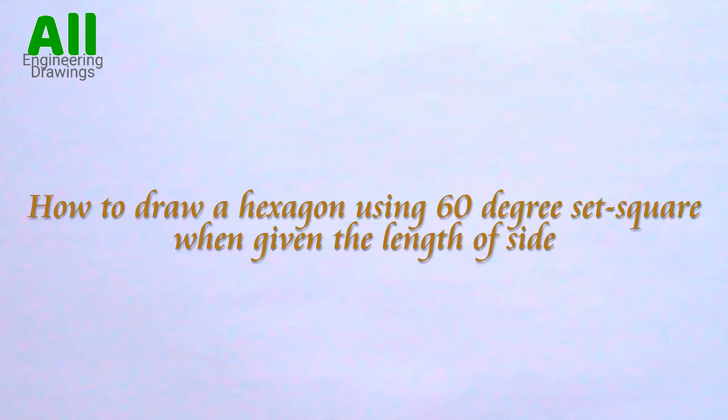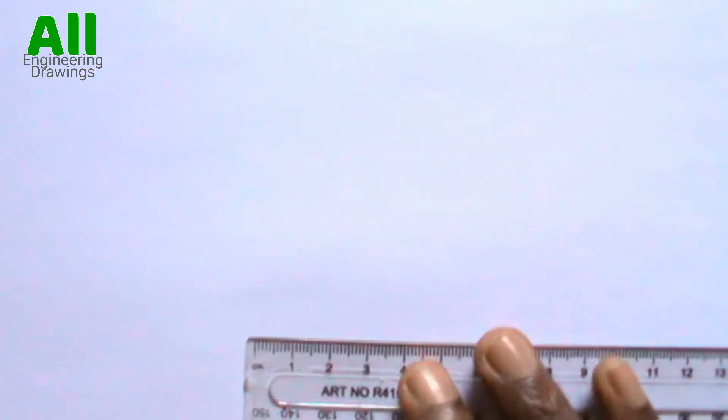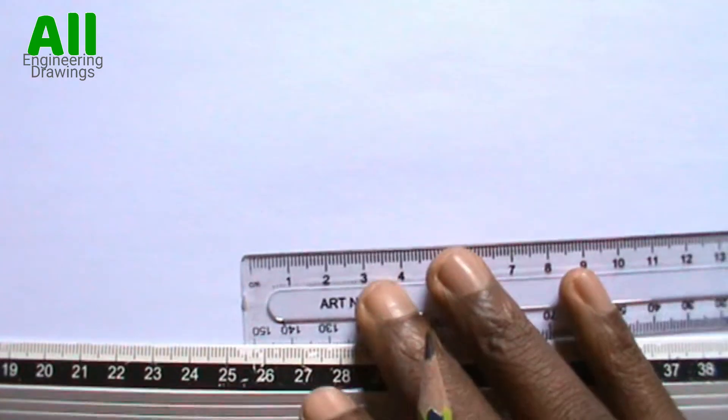Welcome. In this video I will be showing you how to draw a hexagon using 60 degree set square when given the length of side. To draw a thin horizontal line you have to use your T square to support your ruler this way.